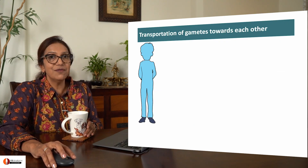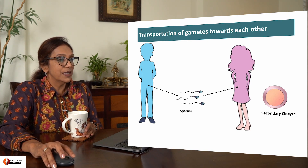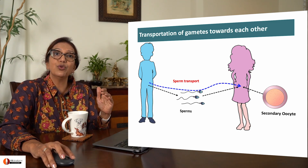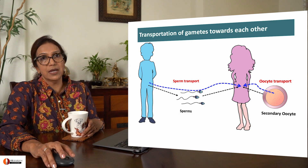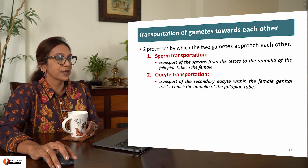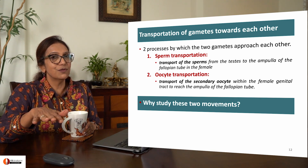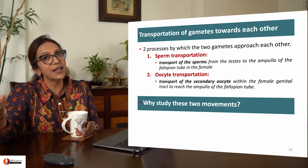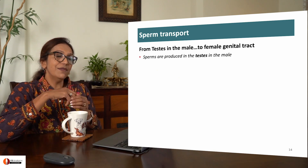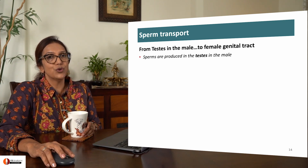Here is the father producing sperms which have reached the ampulla of the fallopian tube, and here is the secondary oocyte also reaching the ampulla. So our lecture is divided into sperm transport and oocyte transport. If there is no sperm transport, there is no fertilization. If there is no oocyte transport, again there is no natural fertilization. Sperm transport means traveling from the testes in the male to the ampulla in the fallopian tube of the female.